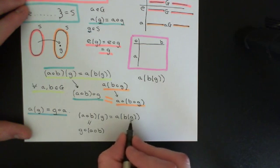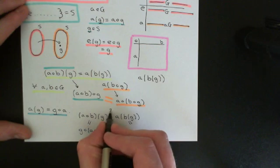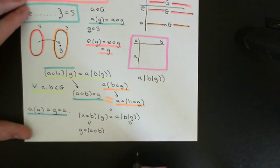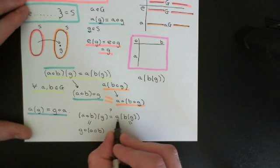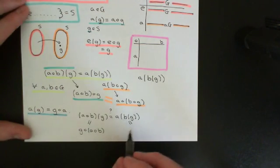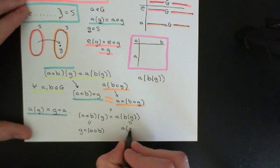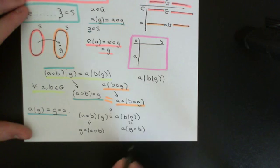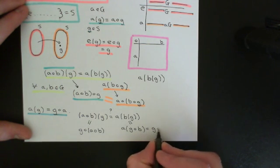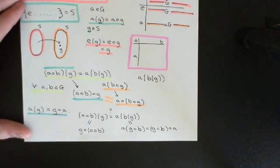Using the definition on the right-hand side — and I should note we don't yet know whether this is true, and it won't be. Applying our definition: b of g equals g∘b. Then a of (g∘b) equals (g∘b)∘a, which by associativity equals g∘(b∘a).